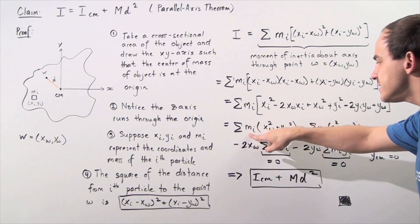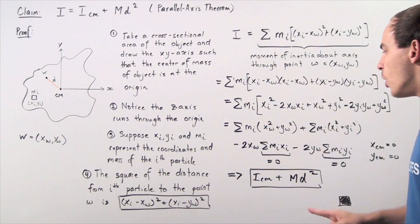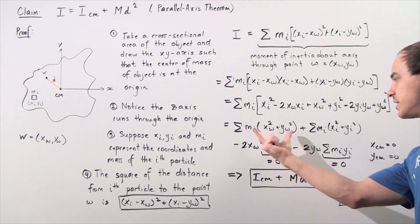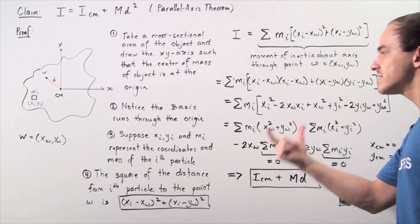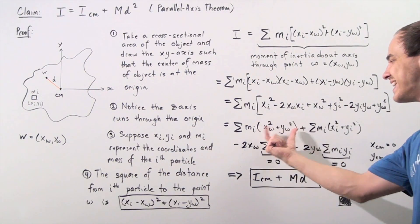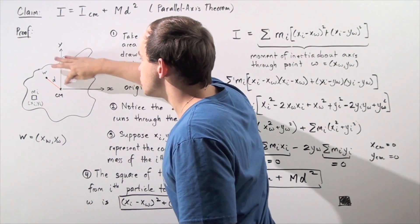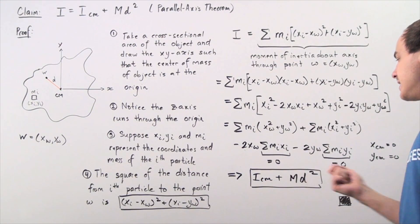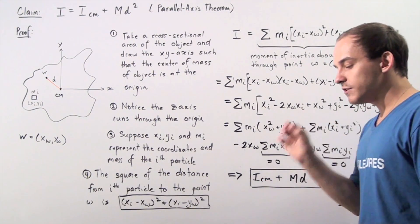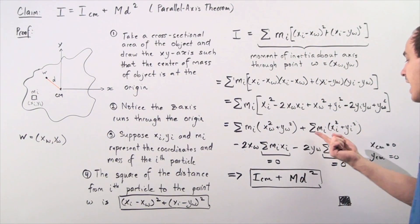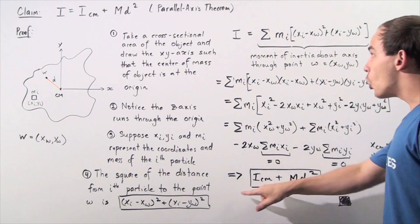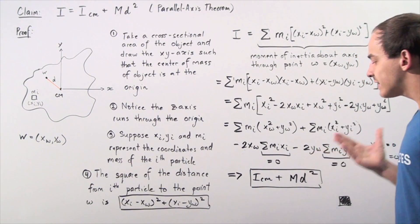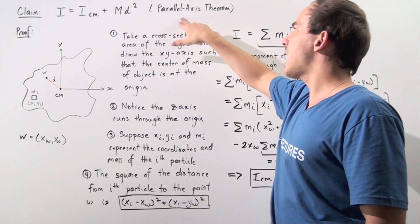Note that the summation of mi times (x_w² + y_w²) is simply md², where the sum of all particle masses is m and the distance from the origin to point w is d. The remaining summation of mi times (xi² + yi²) is simply I_cm — the moment of inertia of the object rotating about the axis through the center of mass. Therefore, the moment of inertia I equals I_cm + md², which concludes the proof that the parallel axis theorem is true.